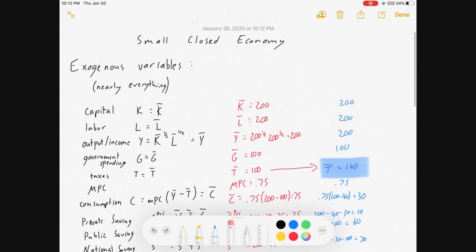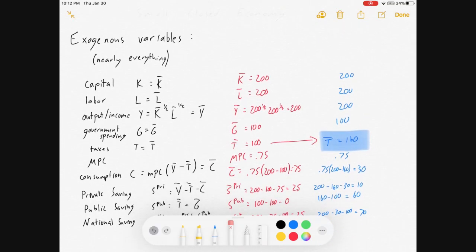All right, last one, just for good measure, you guys. What if we change something at the top? What if we suddenly get a lot more capital in our economy? Capital is now 450 instead of 200. Now what happens? Labor is still unchanged, but oh man, our production function is going to change. Our income is now 450 to the one-half times 200 to the one-half, which comes out to 300.